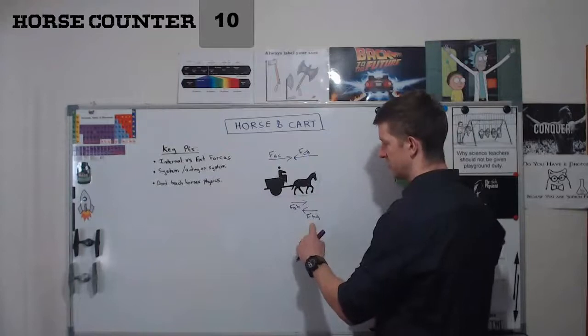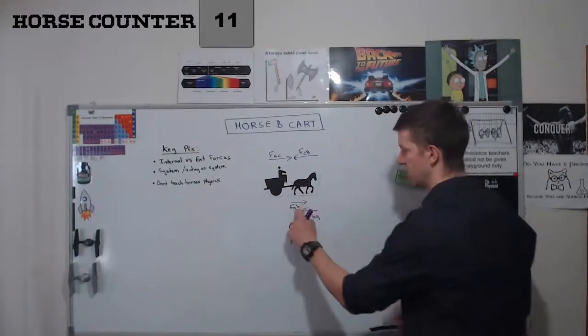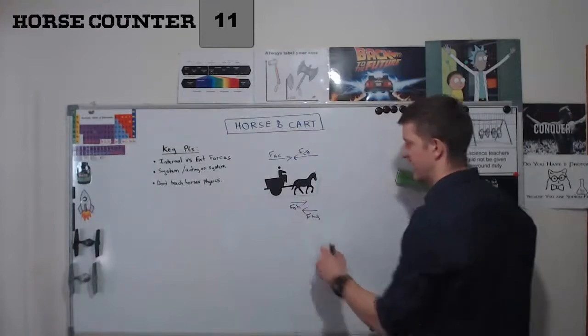If this wasn't equal and opposite to this, the horse would just slip on the spot. But in order for it to not slip, they have to be equal and opposite.